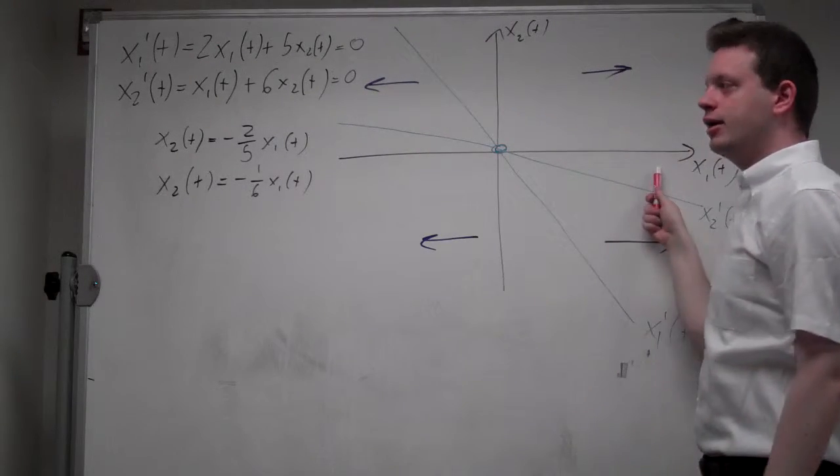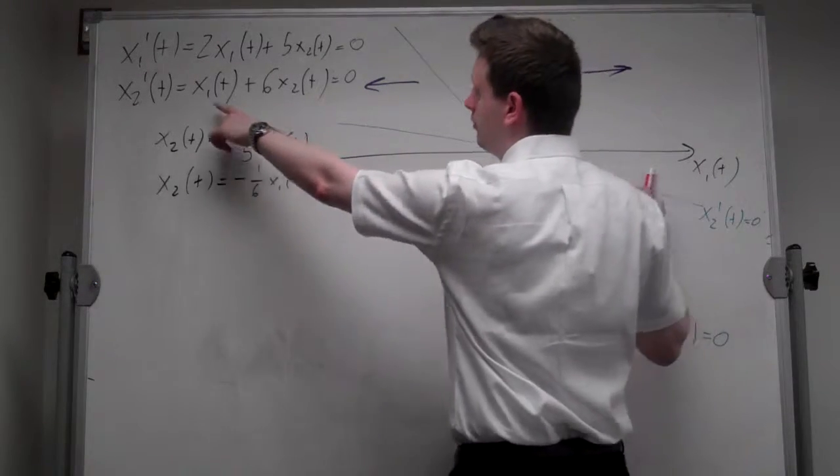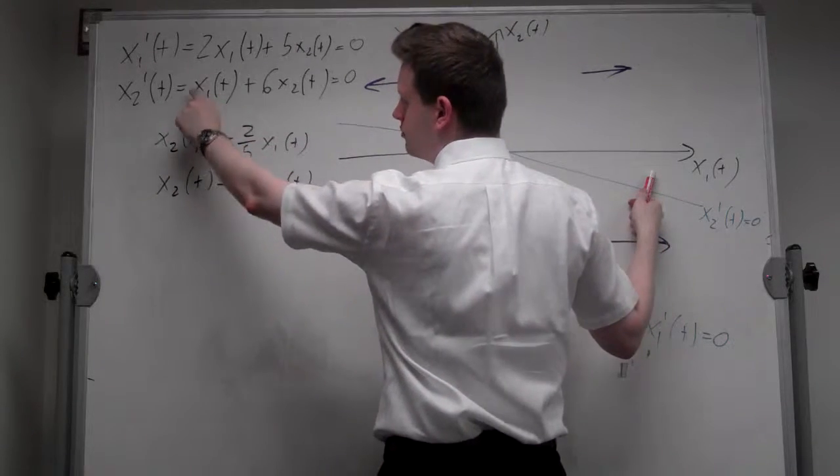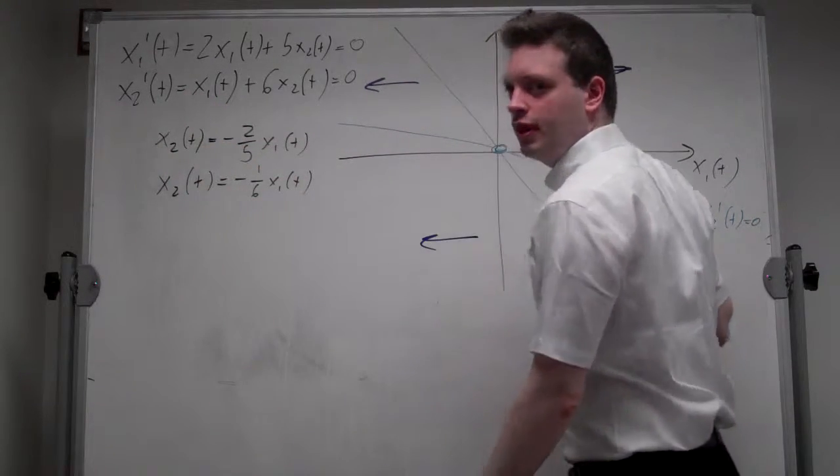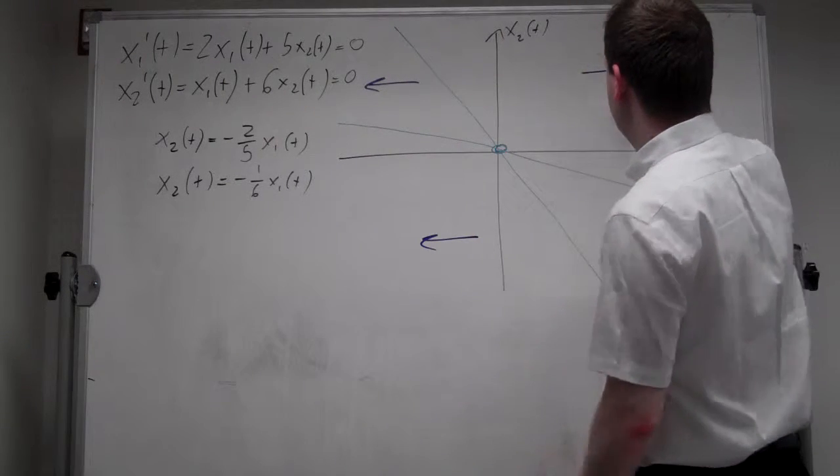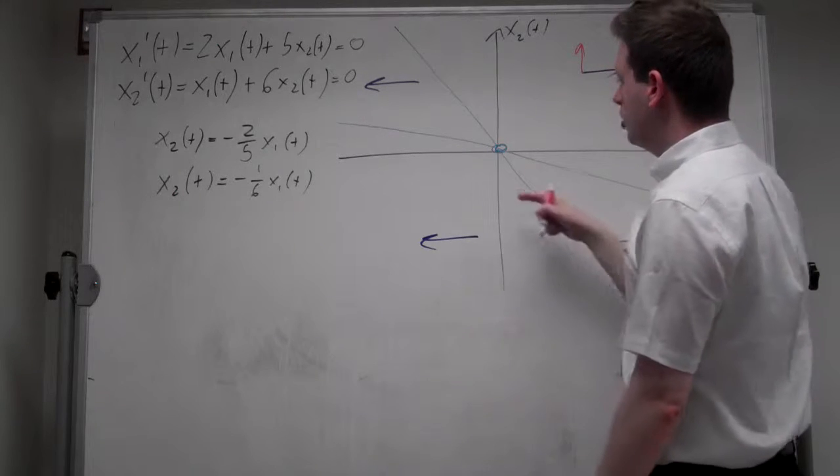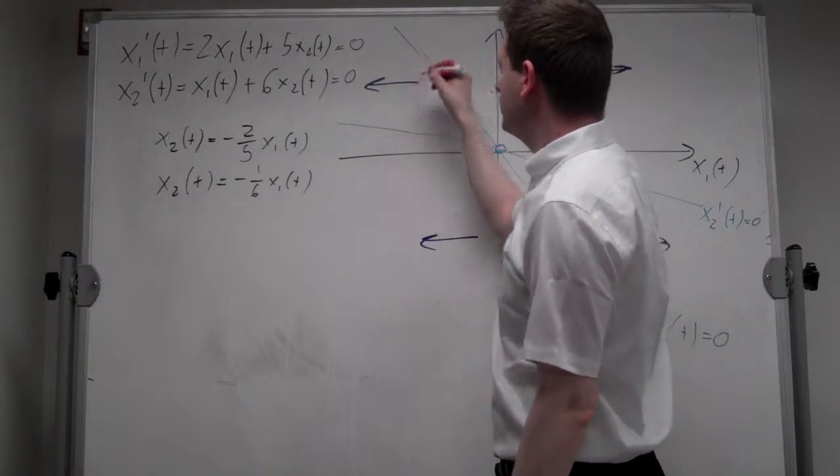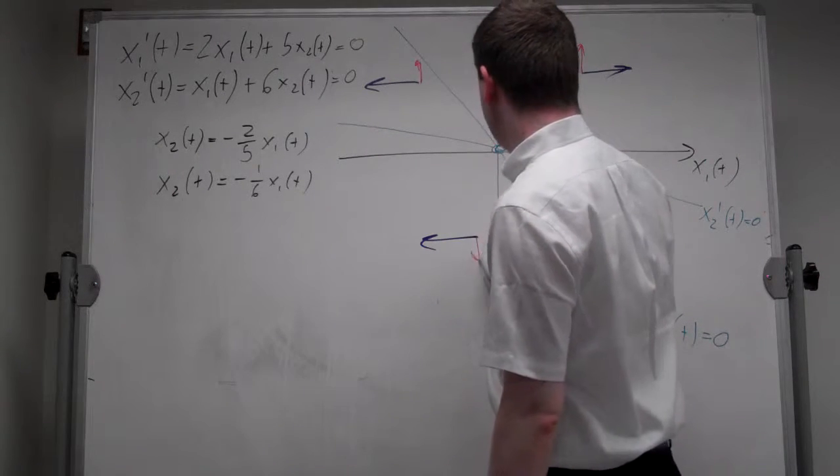So if we go to the right here, we increase x1 t. That means, because there's a positive sign, we increase x2 prime t. So that means we move up. Similarly, if over here, we go above the line, we move up. Then we move down below or to the left of that line.